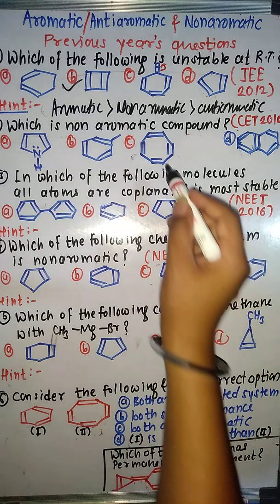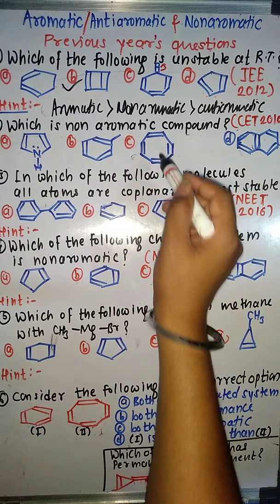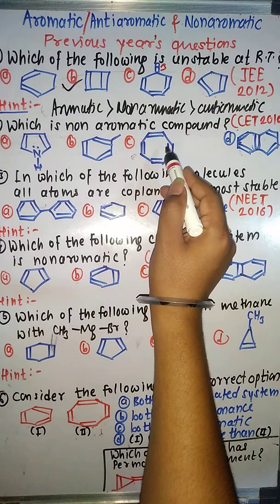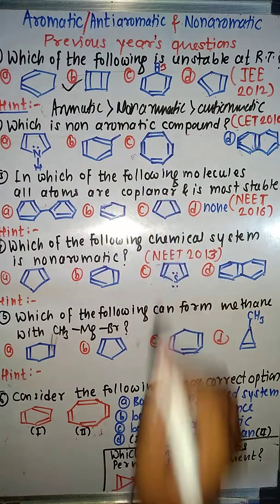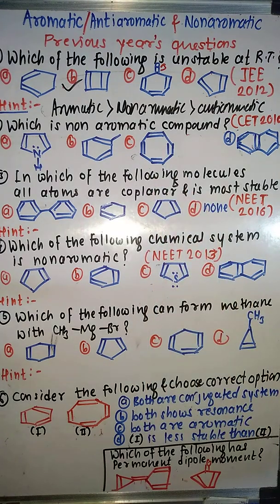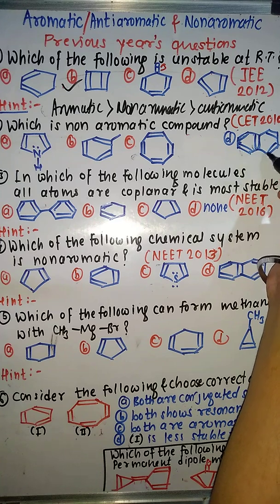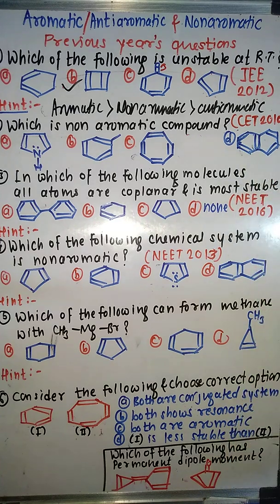Another case is cyclic, conjugated, planar, but it contains an even number of pi bonds — what is it? Anti-aromatic. Another compound is cyclic, conjugated, planar with an odd number of pi bonds — this is aromatic. So a non-aromatic option is not directly seen among these.